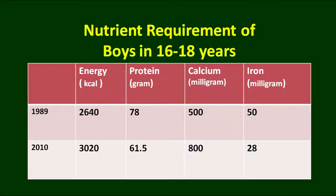For adolescent boys, energy requirements are much higher and protein requirements are also very high. The calcium requirement for girls and boys is similar at 800 milligrams, but iron requirements are slightly higher at 28 milligrams for boys.